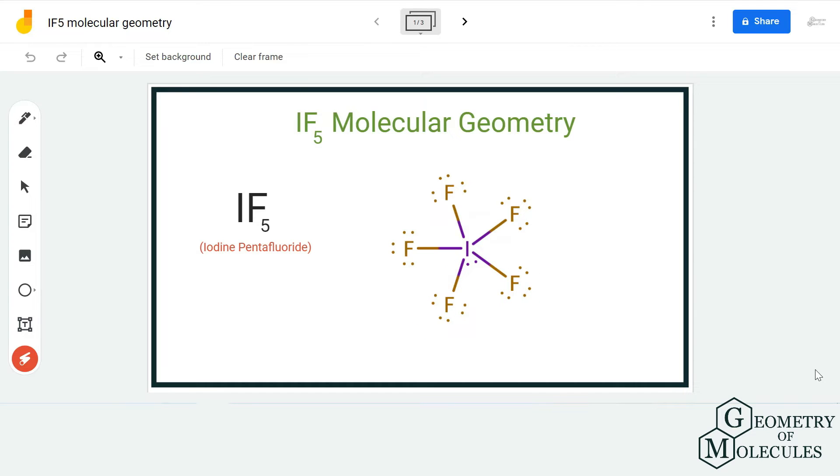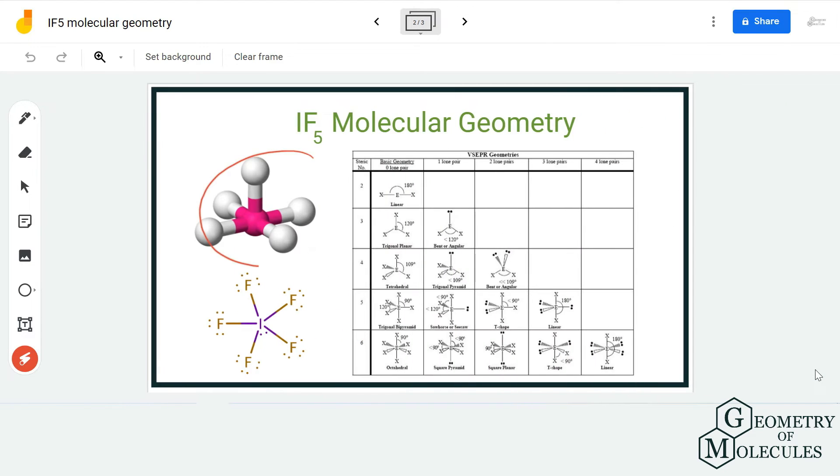When we are determining the molecular geometry of any molecule, we take into consideration all these points. If you look at its shape, it seems to be square pyramidal because of the arrangement of the fluorine atoms and the lone pair present on the iodine atom.